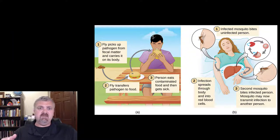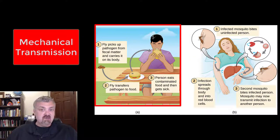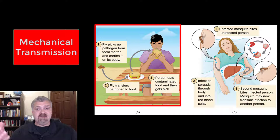So in this image here, a fly actually landed on fecal material and picked up some bacteria or some other pathogen, and then it landed on this burger and transmitted the pathogen to the food. The person ate it and got sick.